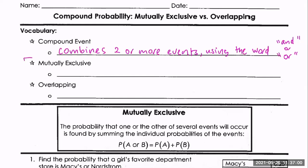Regarding 'or' situations, there are two types. When we ask what's the probability of this or that occurring, a decision has to be made: can these two events occur simultaneously, at the same time, or are they non-overlapping and can't occur at the same time? The first type is called mutually exclusive — you can abbreviate it as ME. Visualize a Venn diagram with no overlap, two circles, and no instance in which both events occur at the same time.